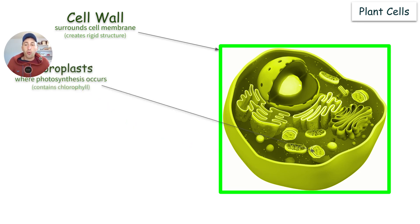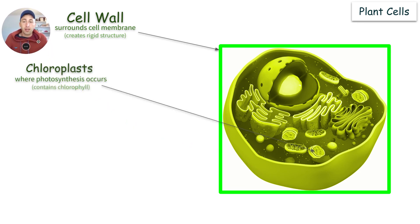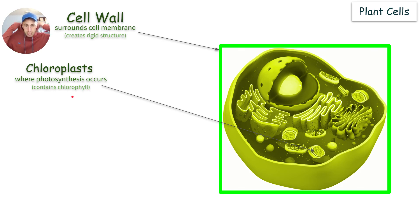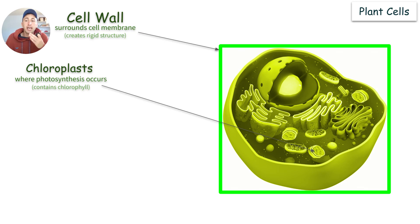Plant cells also have a very important organelle called the chloroplast. The chloroplasts are the green structures where photosynthesis occurs — a very important process by which they make glucose. The chloroplasts contain chlorophyll, which gives plants their green color. Animal cells do not have chloroplasts, so we cannot do photosynthesis.